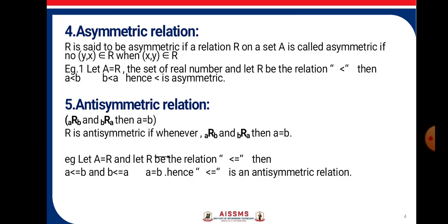Anti-symmetric Relation: if A is related to B and B is related to A, then A equals B. R is anti-symmetric if, whenever A is related to B and B is related to A, then A equals B. Let A equal the set of real numbers and let R be the relation 'greater than or equal to'. Then when B ≥ A and A ≥ B, it follows that A equals B. Hence 'greater than or equal to' is an anti-symmetric relation.